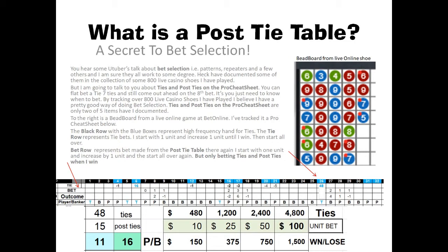And that proves out here — you see it happened in hand 6. We had a winner, two units. What I do is start out with one unit and increase a unit each time I bet for the first seven ties. So you can see over here, I bet one unit because I won, so I dropped down a unit. Then I go over here — I bet two units, three units, four units, five units. How many of you probably said at this stage, forget it, I'm not betting any more ties? And I understand that. But if you have faith in the Pro Cheat Sheet, it works out for you.